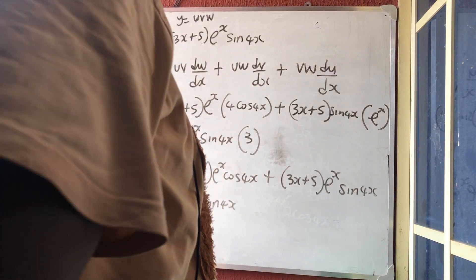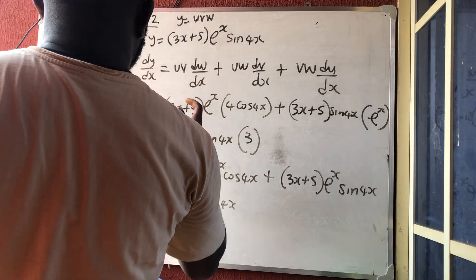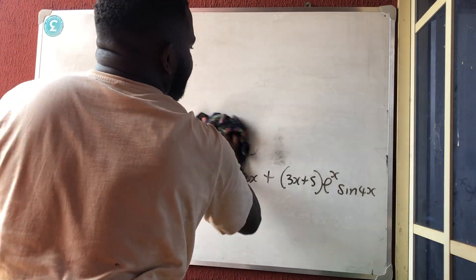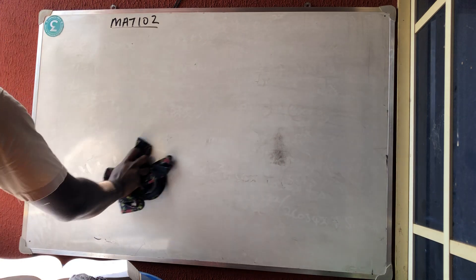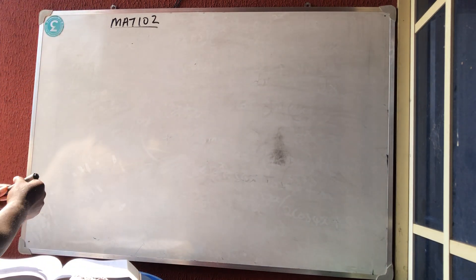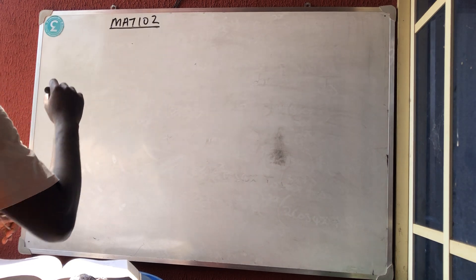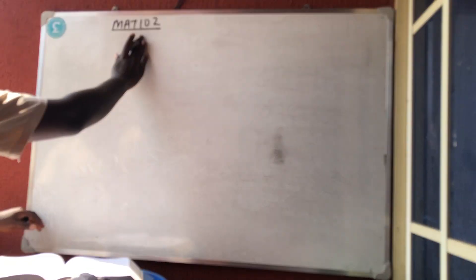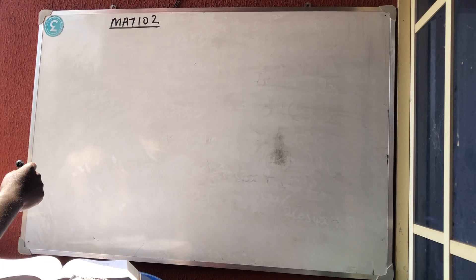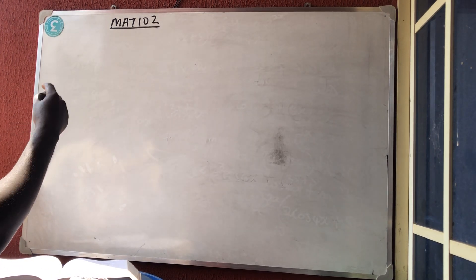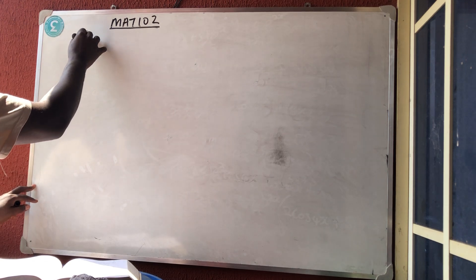Good morning and welcome to Master Talker online class. We are still on differentiation. We have done the definition of differentiation, we have done the chain rule — differentiate the bracket, differentiate everything. We've done the product rule: leave the first one, differentiate the second one, plus leave the second one, differentiate the first one. So we are now on the quotient rule.